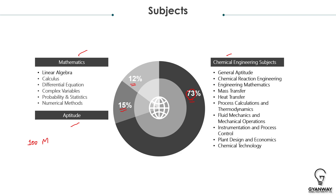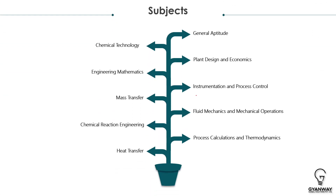The 73% for core Chemical Engineering holds the key, because many people will be able to score good marks in Mathematics and General Aptitude — those are the same for everyone. But the core Chemical Engineering portion is what really matters, and 73 is a huge number. We'll cover all subjects and then go topic-wise.